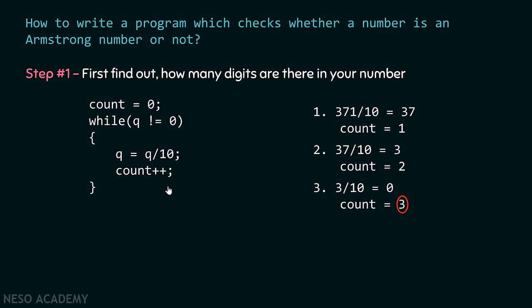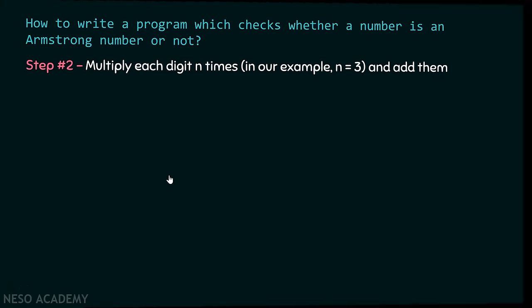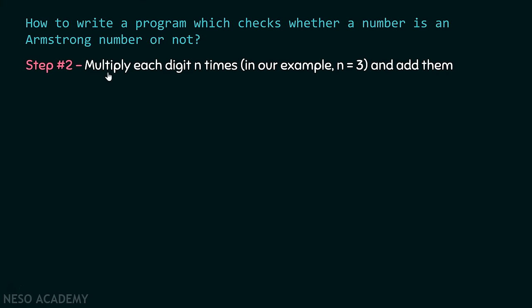Step two: multiply each digit n number of times and add them together. In our case, n is 3 since 371 is a three-digit number. We have to multiply each digit three times and finally add them together.